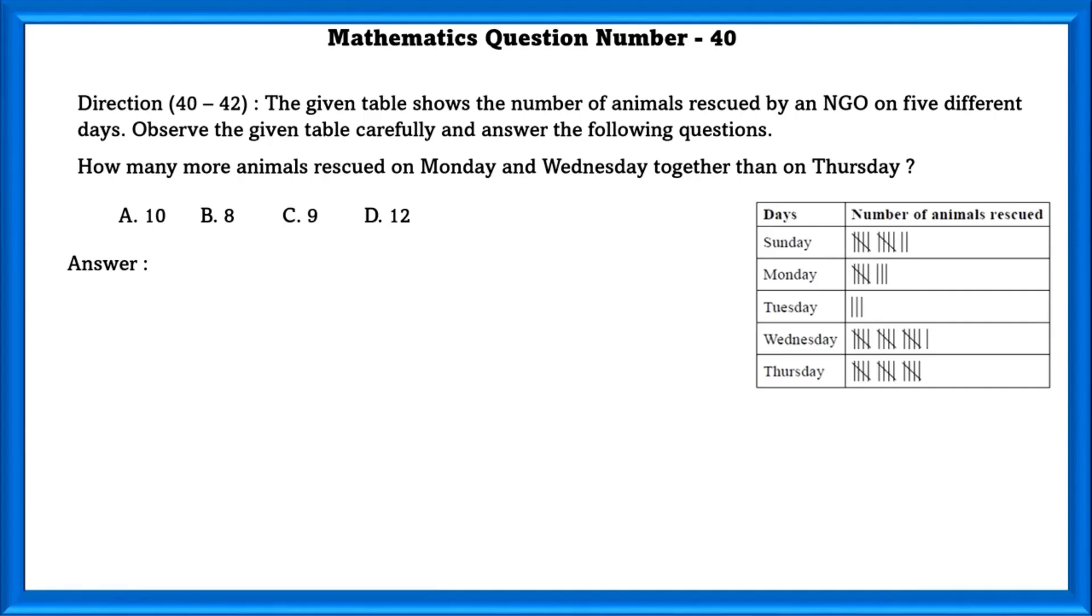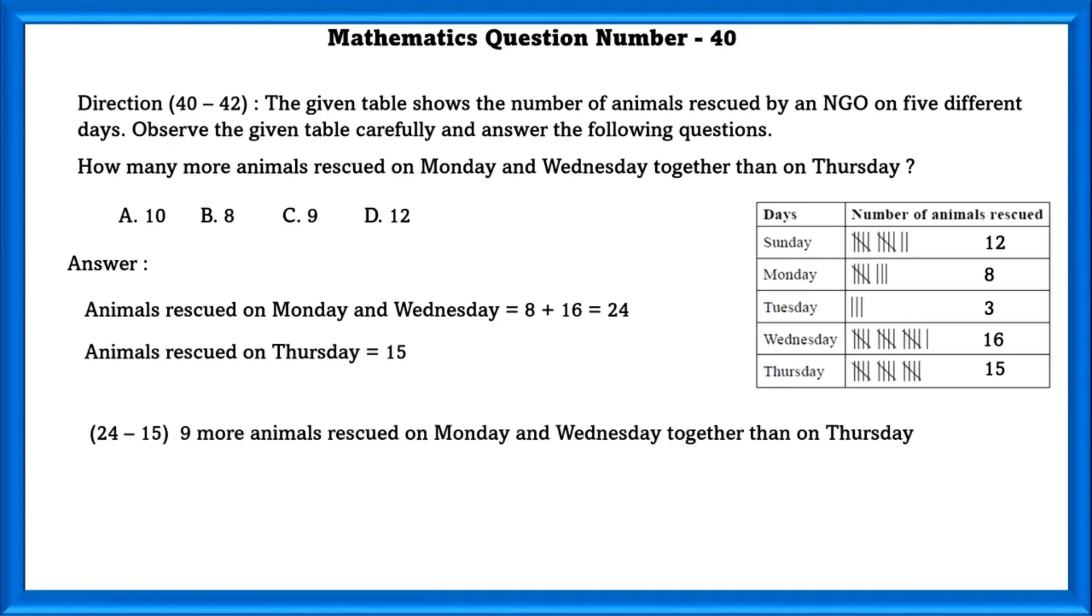Mathematics question number 40. The given table shows the number of animals rescued by an NGO on 5 different days. Observe the given table carefully and answer the following questions. How many more animals rescued on Monday and Wednesday together than on Thursday? Animals rescued on Monday and Wednesday together is equal to 24. Animals rescued on Thursday is equal to 15. So 9 more animals rescued on Monday and Wednesday together than on Thursday.